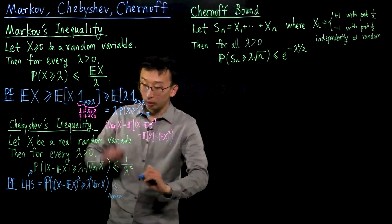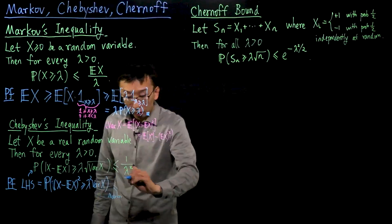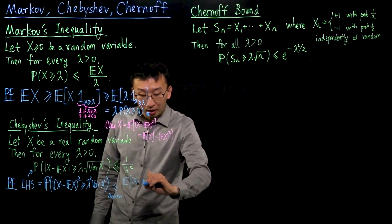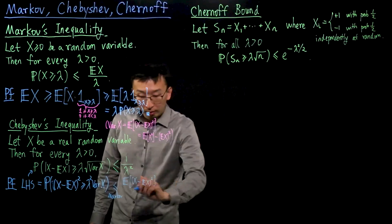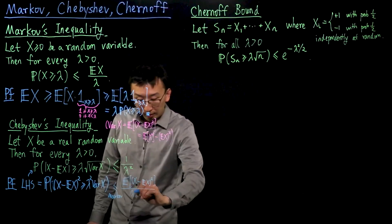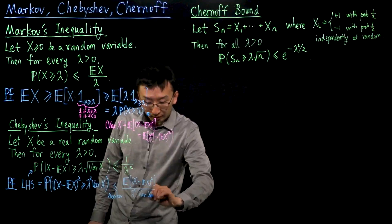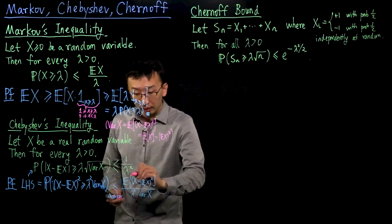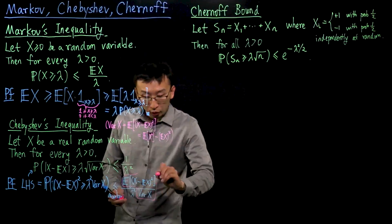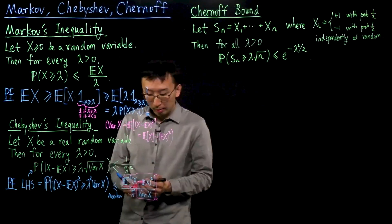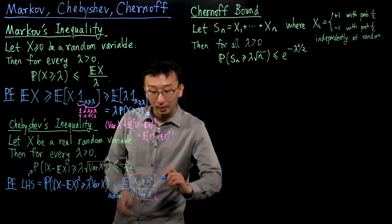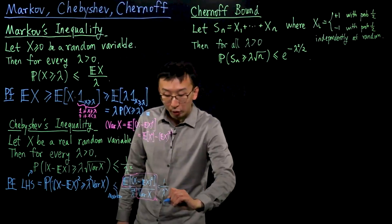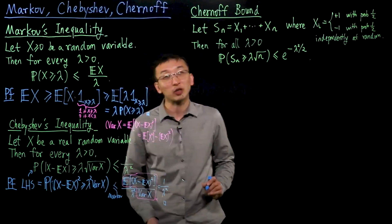Applying Markov to get the expectation of (x minus the expectation of x) squared, divided by lambda squared times the variance of x. But from the definition of variance, the expression in the numerator is equal to the variance of x, so the numerator and part of the denominator cancel, giving a ratio of 1. Therefore the right-hand side equals 1 over lambda squared. So that finishes the proof of Chebyshev's inequality.